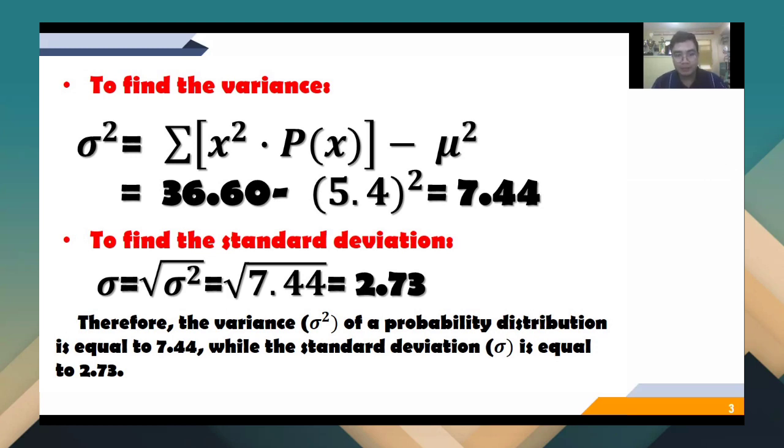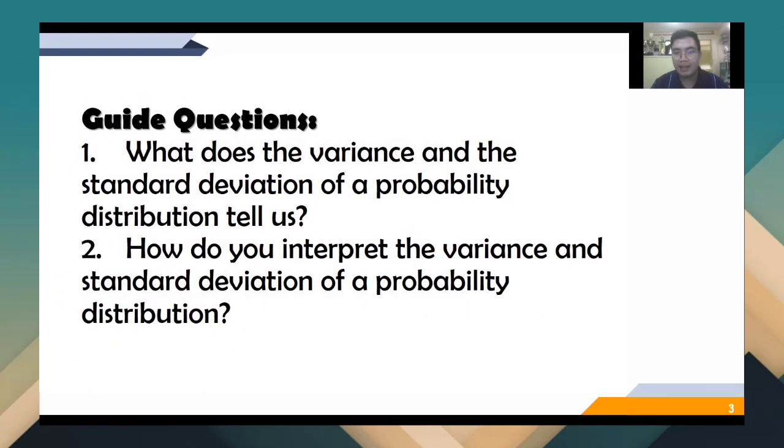Now, to get the standard deviation, here is your variance. The 7.44 is already our variance. To get the standard deviation, you get the square root of 7.44 and it will give us, of course, 2.73. And that is now your standard deviation. So again, to recap, what is our mean? Our mean of the data earlier is 5.4. Our variance is computed as 7.44 and our standard deviation is equivalent to 2.73.